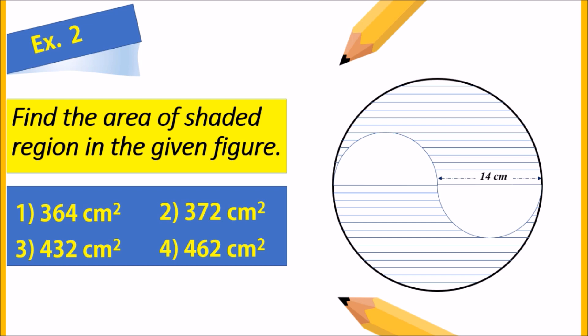Example 2: Find the area of the shaded region in the given figure. Options are: 364, 372, 432, and 462 centimeter square. As we can see, there are two small semi-circles; when joined together we get one small complete circle. So we have two circles — one big and one small. To find the shaded region, we find the area of the big circle and subtract the area of the small circle.